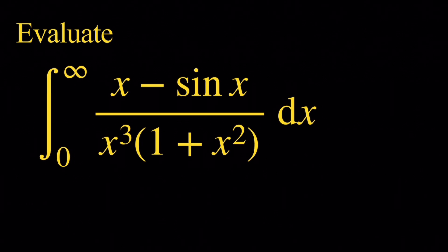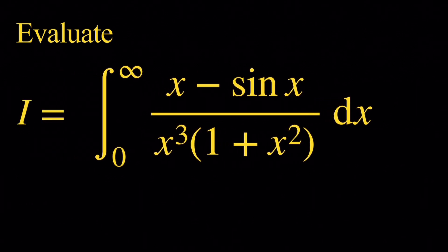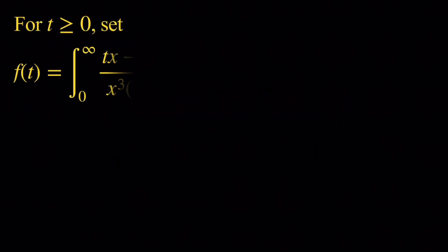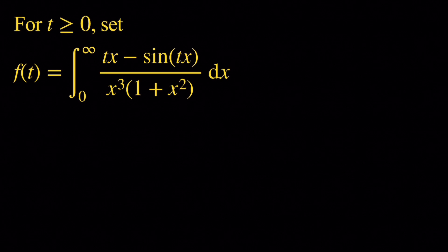Now let's denote this integral by i. We're going to use the Laplace transform. In order to do that, we're going to introduce a function f of t, defined as the integral from 0 to infinity of tx minus sine of tx over x cubed times 1 plus x squared dx, for t greater than or equal to 0. So i is equal to f of 1, and once we're able to compute f of t, we should be able to find the value of i.